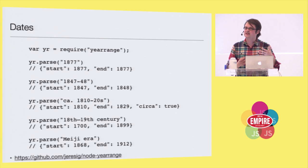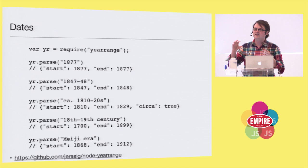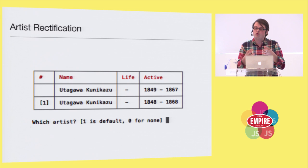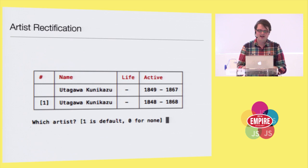I also wrote a library for parsing dates, since museums have very interesting ways of writing dates. It parses all those weird formats and turns them into nice date ranges I can stick into a database and query. Additionally, I've been merging artist biographies — you might have multiple biographies all representing the same artist. I made a command line tool that presents you with different artist biographies and lets you say which is the right one and merge them together. For a limited definition of cool, I think it's pretty cool.